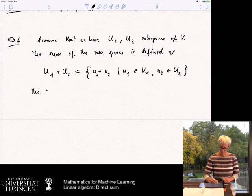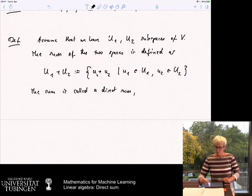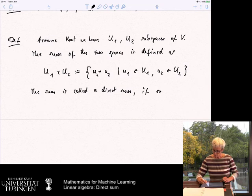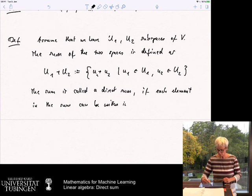So the sum that we have just seen is called a direct sum if each element in the sum can be written in exactly one way.